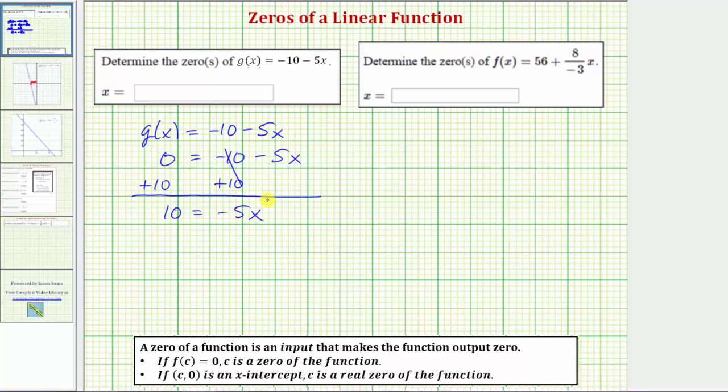so we have ten equals negative five x. The second step is to multiply or divide in order to solve for x. Because negative five x means negative five times x, to undo this multiplication, we divide both sides by negative five. So on the left side we have ten divided by negative five, which is negative two, equals.